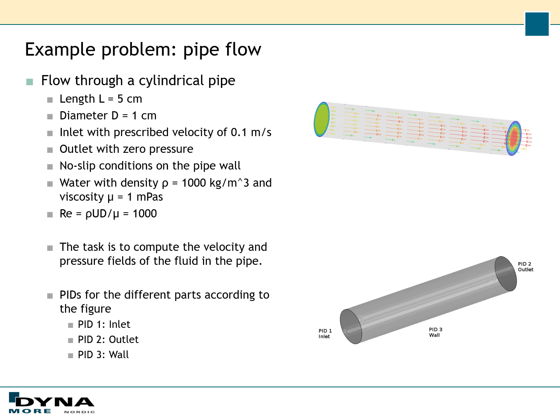This gives us a Reynolds number of 1000, and the task in this tutorial is to compute the velocity and pressure fields of the fluid in the pipe. For the geometry we will assign PID 1 to the inlet and PID 2 to the outlet, whereas the pipe wall will be PID 3.